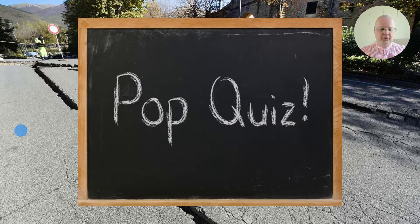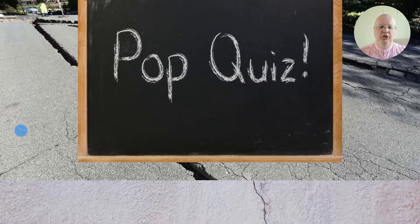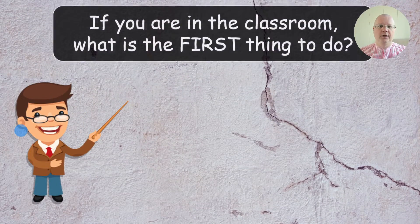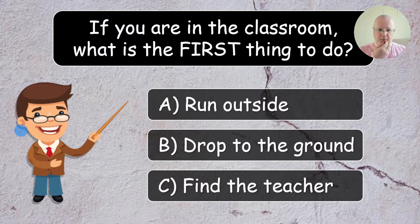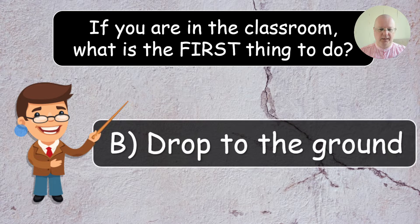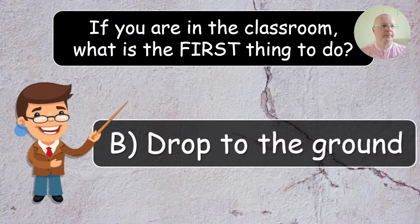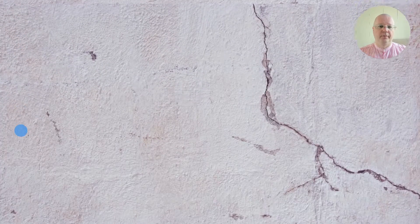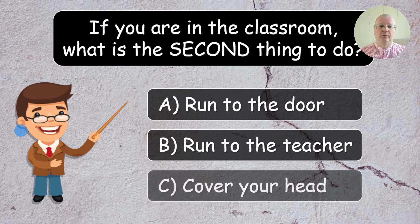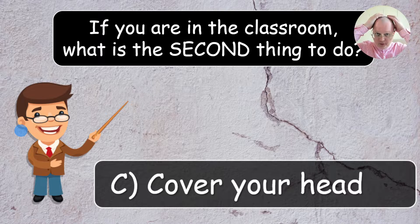After the video, a pop quiz — a student from each team. Question number one: if you are in the classroom, what is the first thing to do? The correct answer is B — drop to the ground. This pop quiz checks listening and reading comprehension. Question number two: if you are in the classroom, what is the second thing to do? The correct answer is: cover your head.